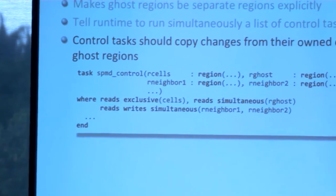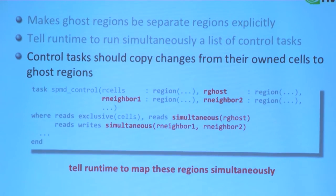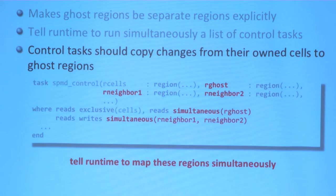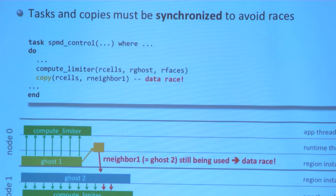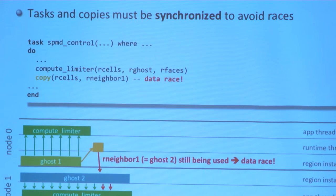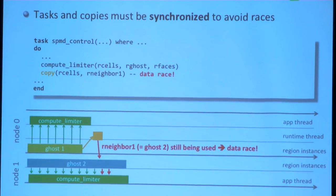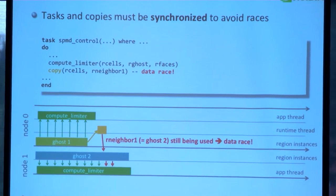This relaxed coherence must be stated in the task signature — declaring that the SPMD control task will use these three regions in simultaneous coherence mode, so the runtime knows which regions should be mapped to a single instance for those same regions. Once you have all this set up, the two different control tasks need to communicate to propagate their updates to each other.